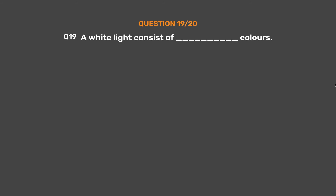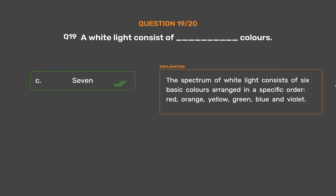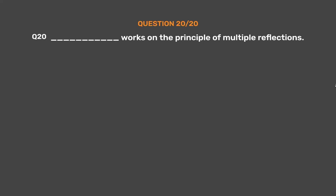Question number 19: White light consists of how many colors? Option A: 5. Option B: 6. Option C: 7. Option D: (not specified). The correct answer is Option C, 7. The spectrum of white light consists of seven basic colors arranged in a specific order: red, orange, yellow, green, blue, indigo, and violet.